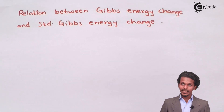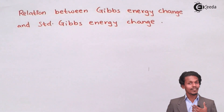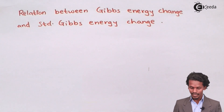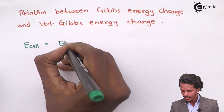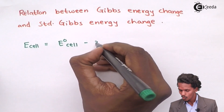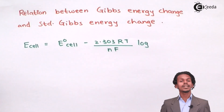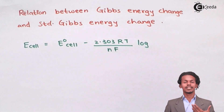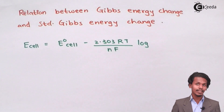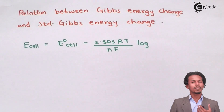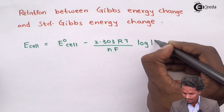Before writing the relation between the Gibbs free energy change and standard Gibbs free energy change, we should first recall the Nernst equation that we have already studied. So let us represent it again. E cell equals E naught cell minus 2.303 RT divided by NF into log of the concentration of products divided by the concentration of reactants. I will represent that ratio by the common factor K, the equilibrium constant.